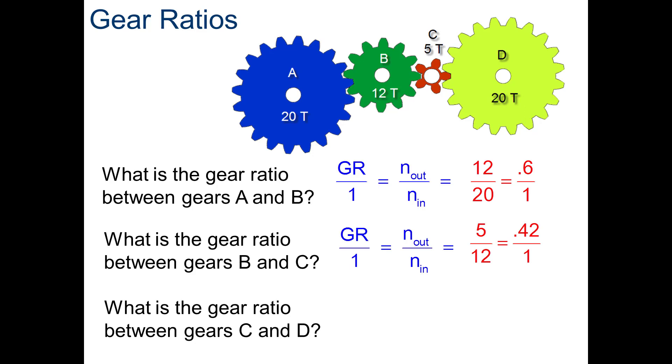Now, go ahead and take a second and pause the video and calculate the gear ratio between C and D. And you should have gotten 4 to 1, 20 divided by 5.